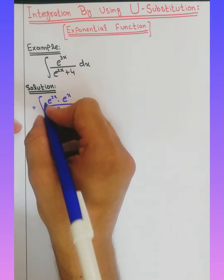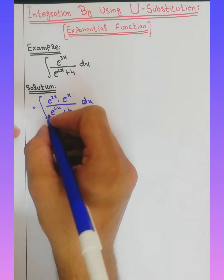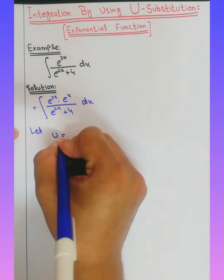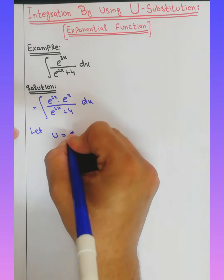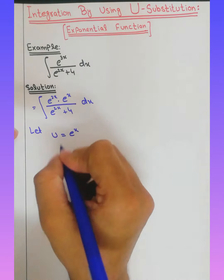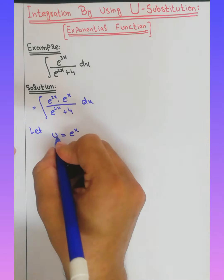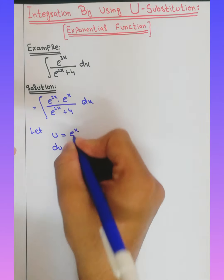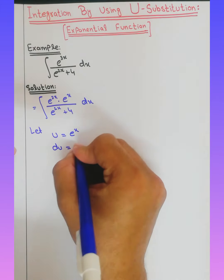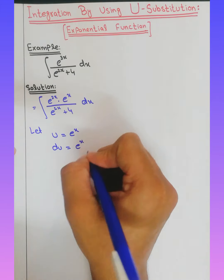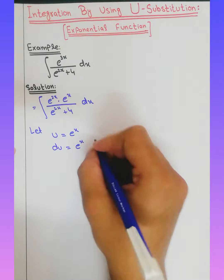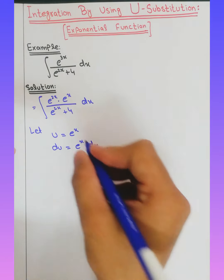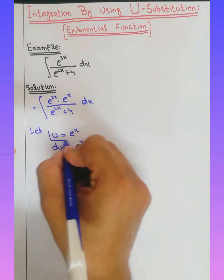Now we let u equal to e^x. We will use differentials. So d of u is equal to e^x dx. When we use the derivative, d of x is the differential.